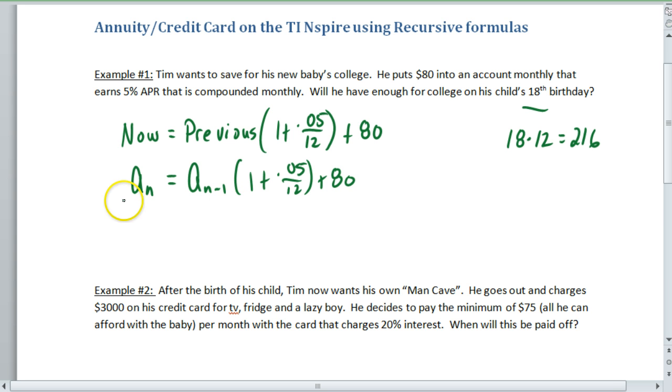Now is equal to the previous times 1 plus 0.05 divided by 12 and then plus 80. In the calculator we have U notation, so usually they have U of 1 or 2 or 3. They can't do subscripts in the calculator so they're going to write it like this. This would be for the calculator, and we also have to make sure that we go out to 216 payments. So let's try that one now.